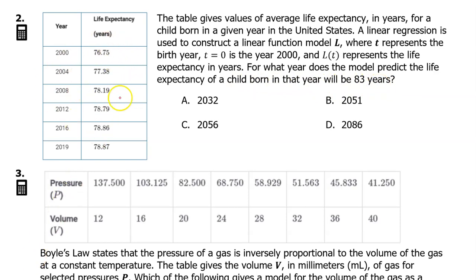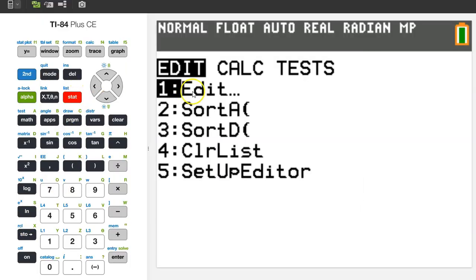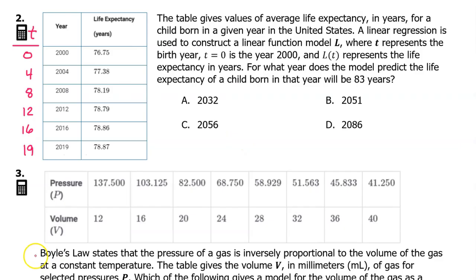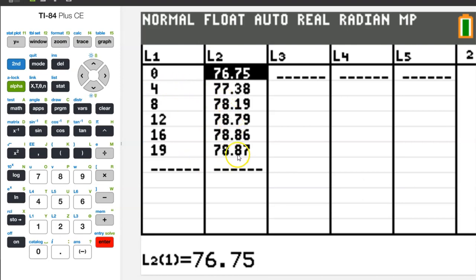Let's start by entering this data into the graphing calculator. Just hit STAT and then enter for edit. Let's enter the input values as L1, and let's enter the output values as L2. Be careful, we will not enter the years like 2000 and 2004. We are told that t equals 0 is equal to the year 2000, for example. So, we will enter 0, and 4, and 8, and 12, and 16, and 19 for these years. When your data is typed in, it will look like this.